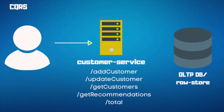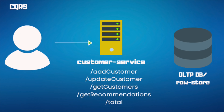You have a customer service with a lot of endpoints — you can add a customer, update a customer, get customers, and get recommendations or totals. This backend service hits the OLTP, the online transactional database. You're using a relational database as a raw store because you're writing, and that's optimized for writes.